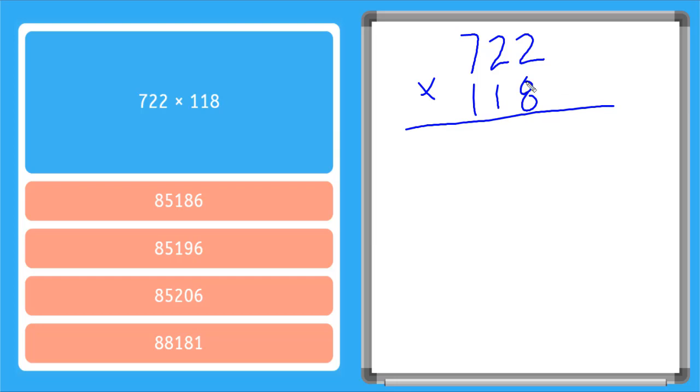Just like when I multiply two-digit numbers together, I'm going to start with my ones column on the bottom, and I'm going to multiply my ones column by each column in the top number. So eight times two is 16, I carry that one. Eight times two is 16, I add that one, 17. Eight times seven is 56, plus I add that one, I get 57.